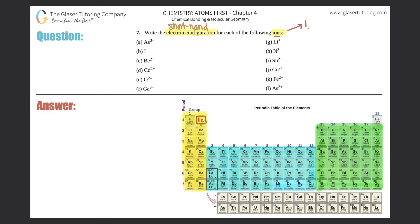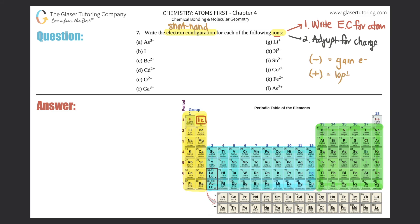How do we write electron configurations for ions? Two things: one, you always pretend there's no charge — write the electron configuration for the atom as if the charge never existed. Then, once you have that answer, adjust for charge. A negative charge always means we gained electrons; a positive charge means we lost electrons. Remember: the yellow group is your s orbitals, blue are the d's, green is the p's, and the two down here are your f's.